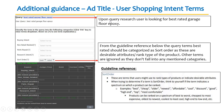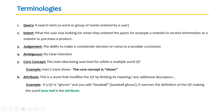Text annotation works that way. Search relevance — query, intent, judgment, and ambiguous are similar concepts. There is also something called 'core concept' you will come across in your guidelines. The core concept is the main idea being searched for within a multiple-word query. For example, in the query 'men's track shoes,' the core concept is 'shoes.' Knowing the core concept makes it easier to understand intent and classify or compare it with another keyword in search relevance.